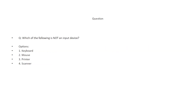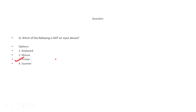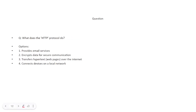Which of the following is not an input device? The options are: keyboard, mouse, printer, and scanner. As we all know, a printer is an output device and the rest are input devices.